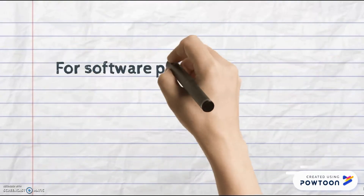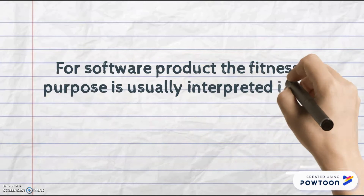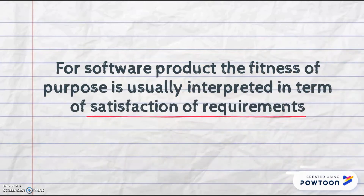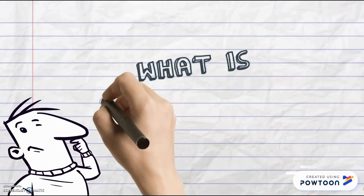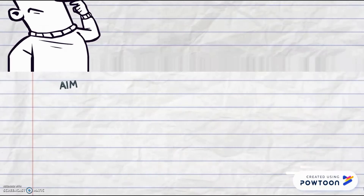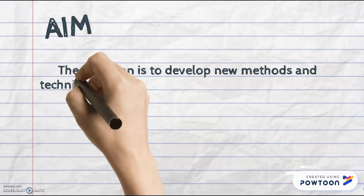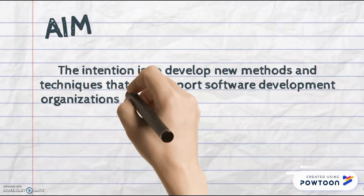For a software product, the fitness of purpose is usually interpreted in terms of satisfaction of requirements. What is the purpose of process quality? The intention is to develop new methods and techniques that can support software development organizations in their aim to have a better software process.